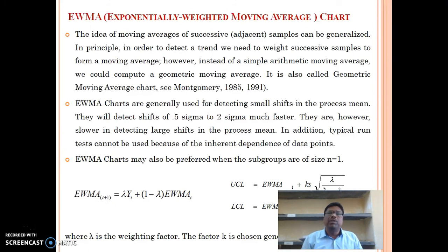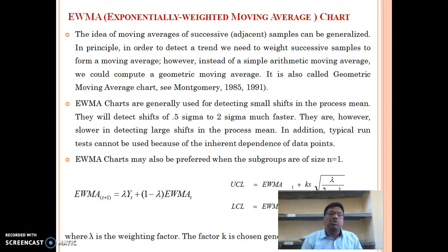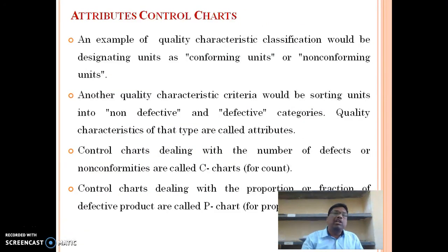The EWMA chart: the idea of EWMA is to take the moving average of successive samples in a generalized way. In order to detect a trend, we use successive samples weighted to form a moving average. Instead of a simple moving average, we compute a geometric moving average — also called the geometric moving average chart. EWMA charts are generally used for detecting small shifts in the process mean; they detect shifts of 0.5 sigma to 2 sigma much faster. However, typical run tests cannot be used because of the inherent dependence of the data points. EWMA charts may also be used when the subgroup size n equals 1. The control limits are UCL and LCL.